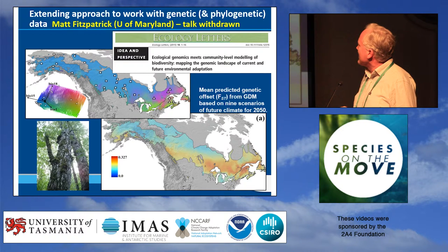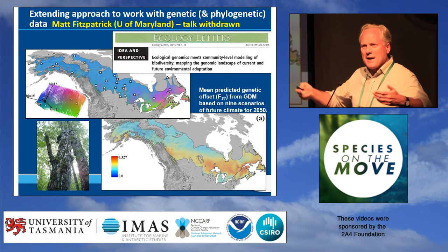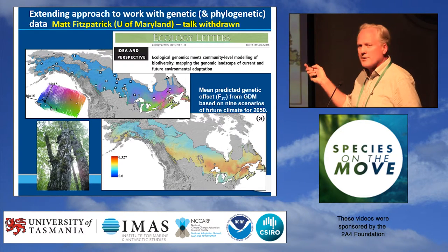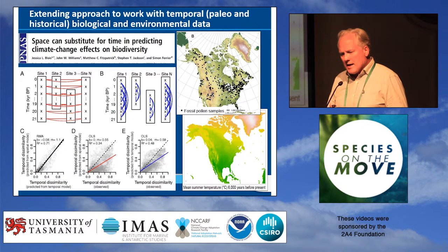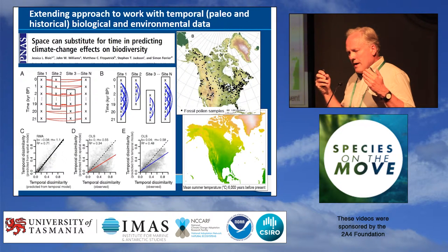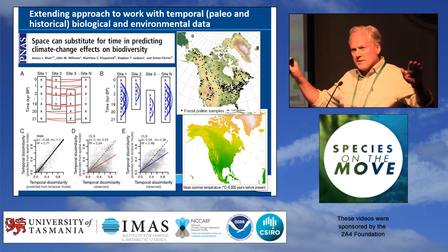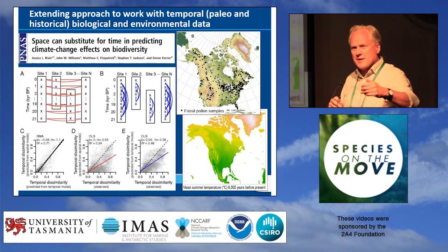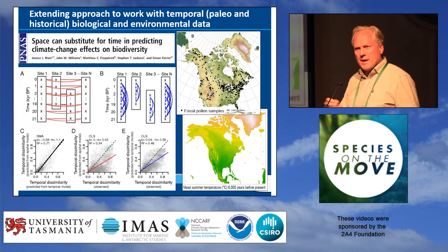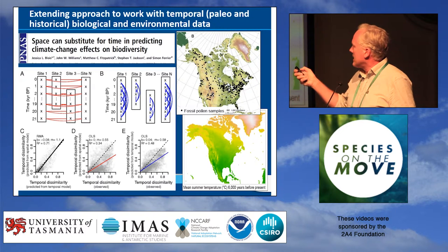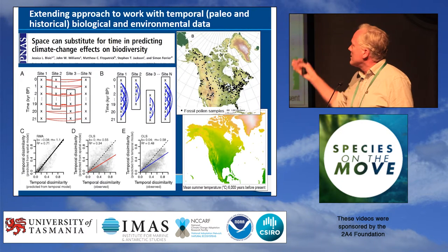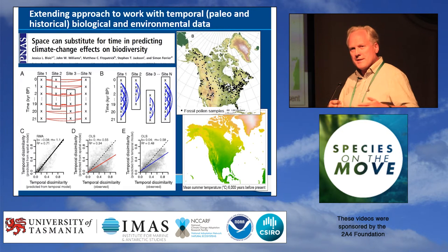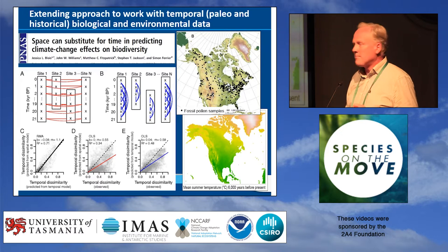Matt Fitzpatrick was going to be presenting here but unfortunately had to withdraw from the conference. This same analytical framework can be applied to adaptive genetic variation, and looking at what the consequences are of that under climate change. A final extension is a growing interest in fitting these models not just to spatial data and then doing space-for-time substitutions to project into the future, but also fitting models to temporal data — in this case work with Jessica Blois and others, using fossil pollen data from North America over 20,000 years, both to fit temporal bioclimatically scaled models and to evaluate the performance of space-for-time substitution.